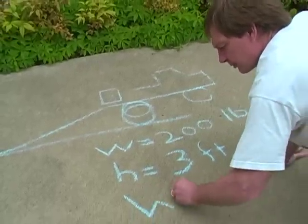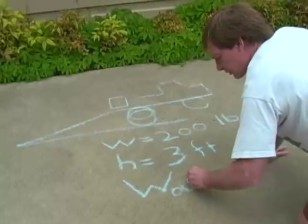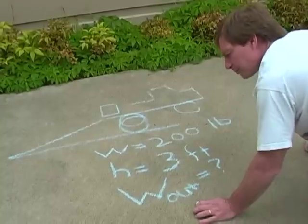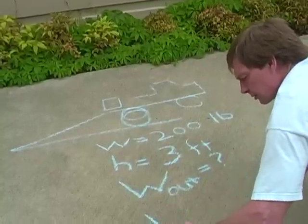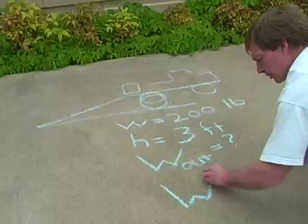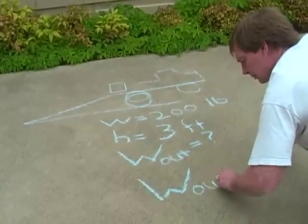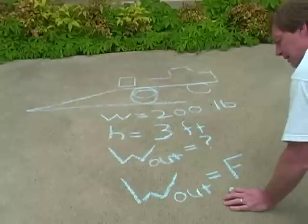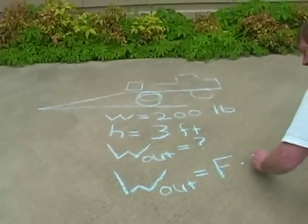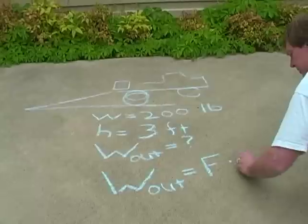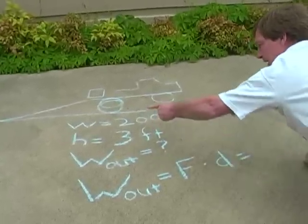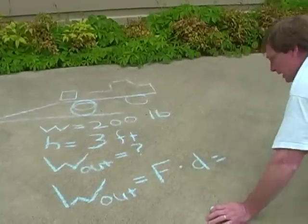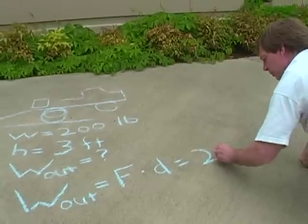That'll be a capital W. Work out question mark. Well, the work out is equal to force, the force that I need to use to raise it, times the distance, the height times the distance. In this case, it's the weight of the object, 200 pounds. That's the force of the object. Remember, weight is a force. If I could raise it straight up, I'd be raising 200 pounds.